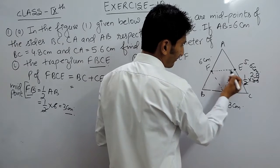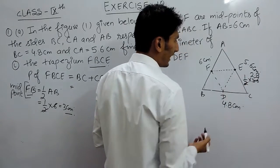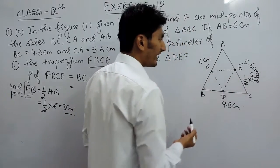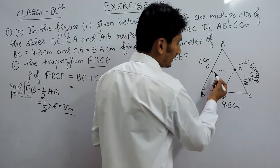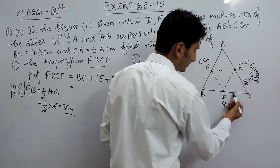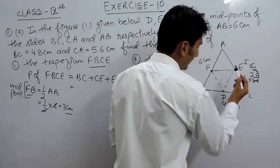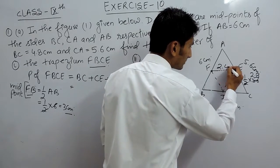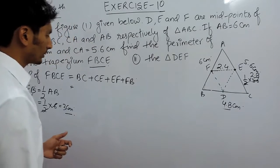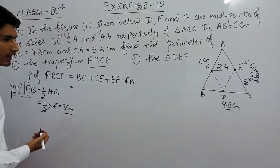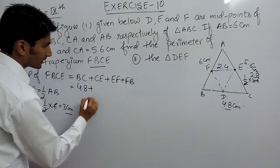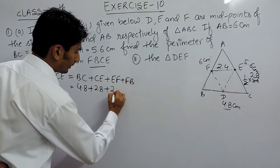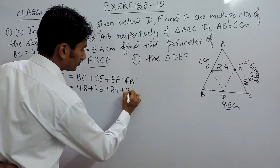F and E are midpoints, and according to the midpoint theorem, if we join the midpoints of any two sides of a triangle, that segment is half of the third side. So EF must be half of BC, which is 4.8 cm, giving EF = 2.4 cm. Now we have all the values: BC = 4.8 cm, CE = 2.8 cm, EF = 2.4 cm, and FB = 3 cm.